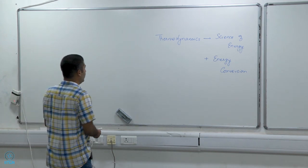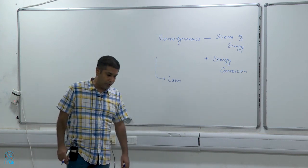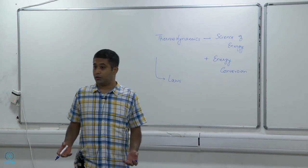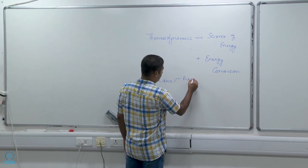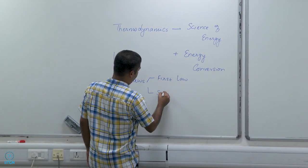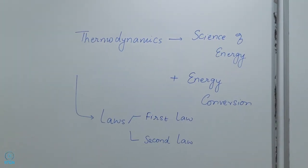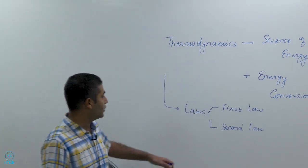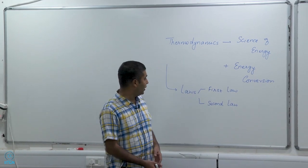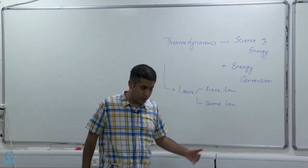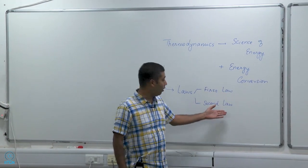Thermodynamics works with the help of laws, and this is what most people associate thermodynamics with. Most commonly people talk about two laws — the first law and the second law. There are two more laws: the zeroth law and the third law. We will not talk too much about the third law, and we will talk a little about the zeroth law later. But first, before we talk about these two laws — why are they called laws? Why is this a law?